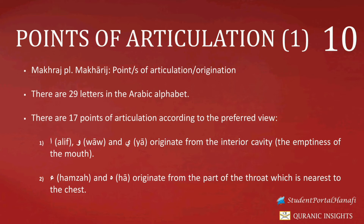Going into a little more detail, we can divide our throat into three different parts. Number one is the top of the throat, which is closest to the mouth. Number two is the middle of the throat. And number three is the bottom of the throat, which is closest to the chest. From each one of these three different parts of the throat, two letters originate.